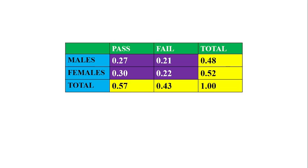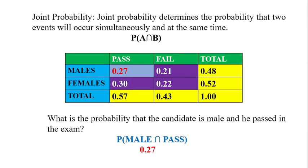The sum of the total probability values should be 1. Since it is written at the end of each row and column, it has the name marginal probability. Next is joint probability. Joint probability determines the probability that two events will occur simultaneously and at the same time. It is denoted by P of A intersection B. From the example, let's find what's the probability that the candidate is male and he passed in the exam — that is P of male intersection pass. The value is 0.27, which is the joint probability value.